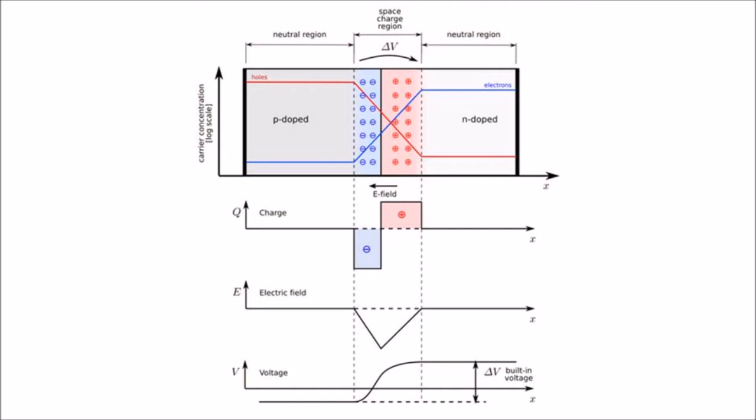The space charge region is a zone with net charge provided by the fixed ions, those are donors or acceptors, that have been left uncovered by majority carrier diffusion.